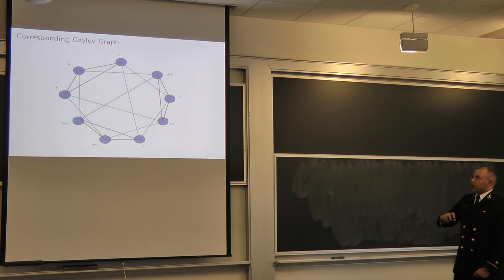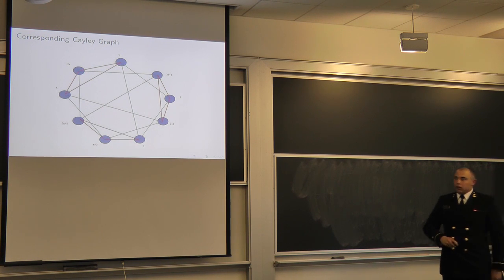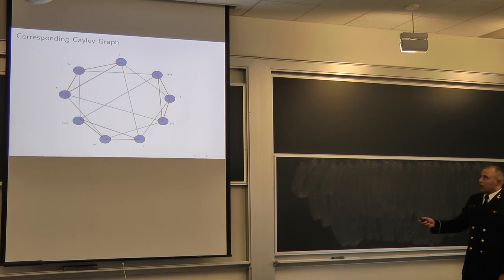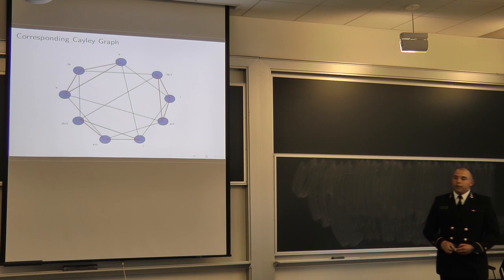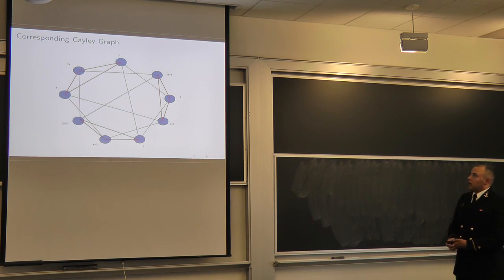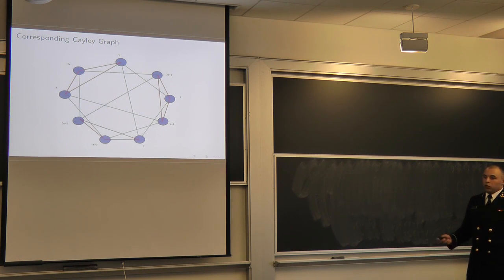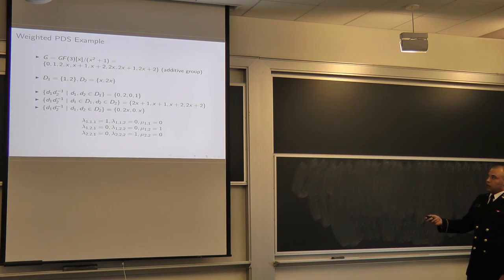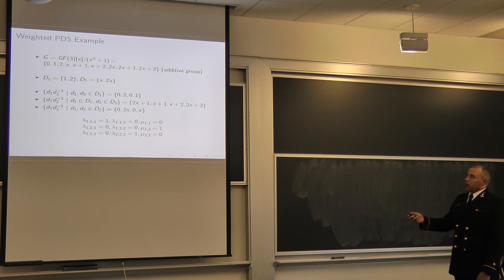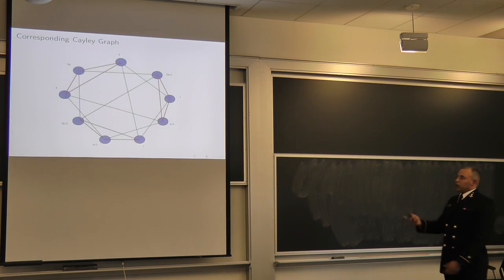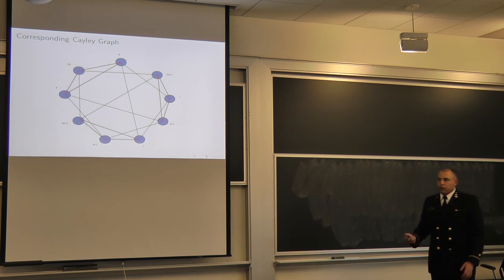Looking at the handout, the Cayley graph that corresponds to this example shows red edges corresponding to D sub 2 and blue edges corresponding to D sub 1. For instance, the edge connecting 0 and 1 is blue because the difference between them is 1, which is in D sub 1. The edge connecting 2x+1 and x+1 is red because the difference is x, which is in D sub 2. That's the simple construction of the weighted Cayley graph.